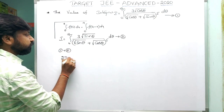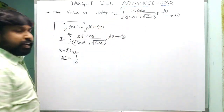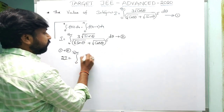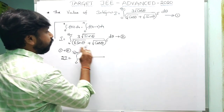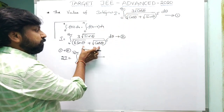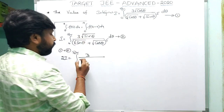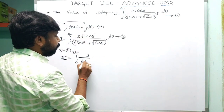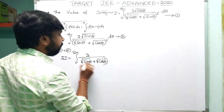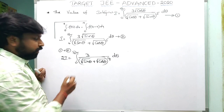Adding equations 1 and 2: I + I = 2I = integral from 0 to π/2. In the numerator you get ∛cosθ + ∛sinθ, and if you factor out 3, in the denominator you also have (∛cosθ + ∛sinθ)⁵. Cancelling (∛cosθ + ∛sinθ) from numerator and denominator, (∛cosθ + ∛sinθ)⁴ remains in the denominator.